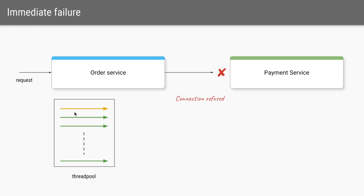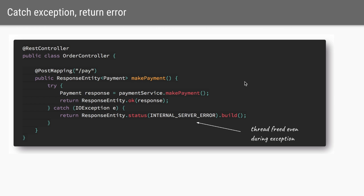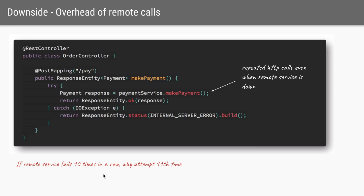In the communication between the order service and payment service, we could face two kinds of failures. The first is called an immediate failure. When the order service gets a request and tries to call the payment service, the payment service immediately sends a connection refused exception. This can happen when the payment service is down and can be handled easily — we wrap the call in a try-catch and whenever we get an IO exception, we send back a default response like a 500 error. Importantly, our thread is freed immediately because we got an exception.